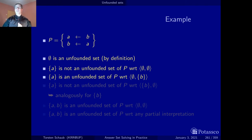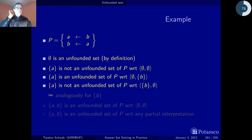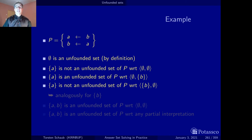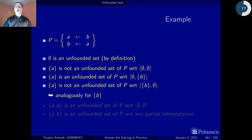This changes if we set B to false: the single possible external support, the rule 'A if B', is now inapplicable, so {A} becomes an unfounded set — though this would also be detected by the fitting operator. If B is true, the rule cannot be called inapplicable and B does not belong to the candidate set, so {A} is not unfounded in this context either. The same arguments apply symmetrically for the singleton set {B}.